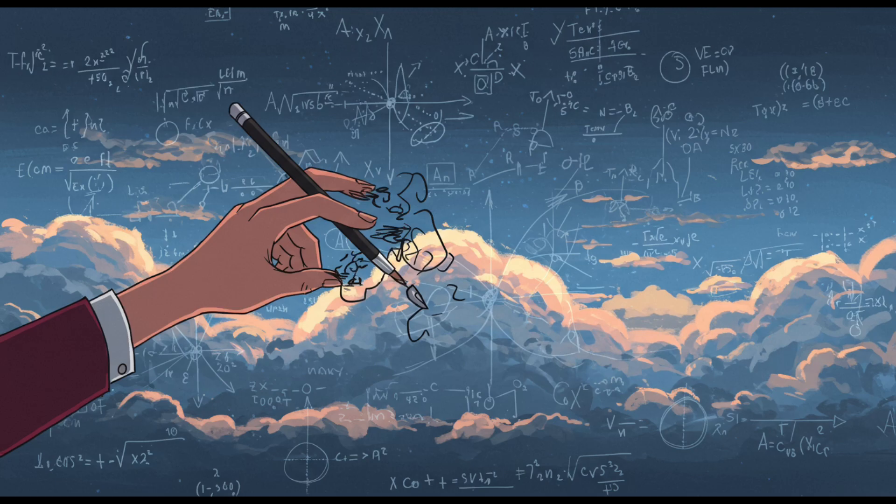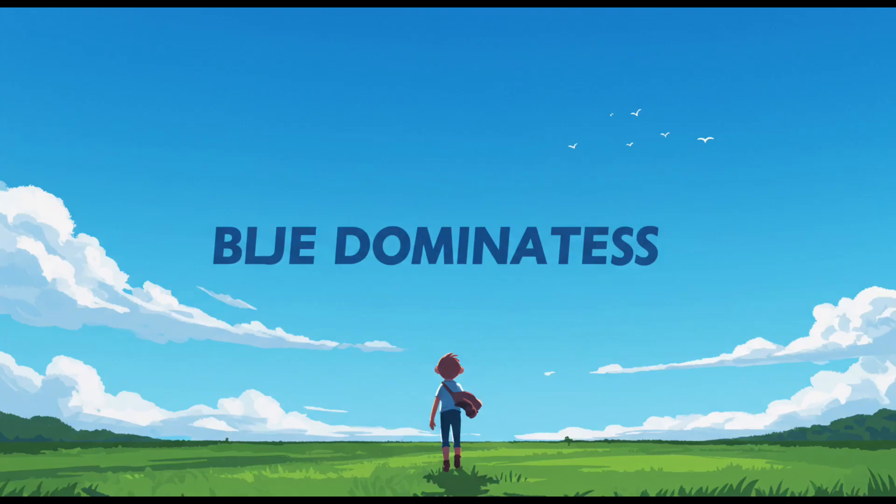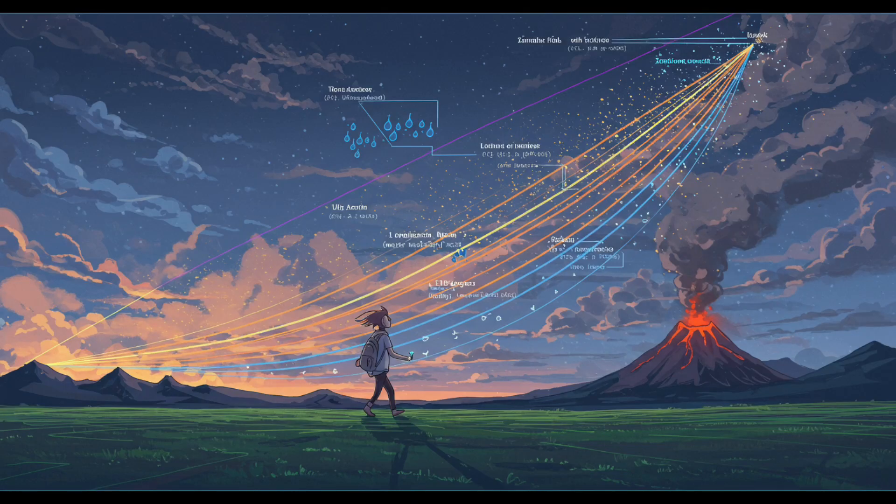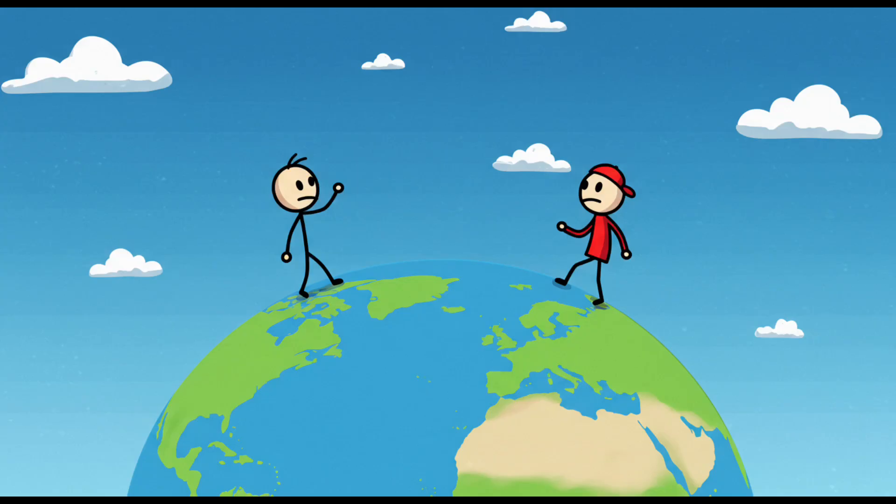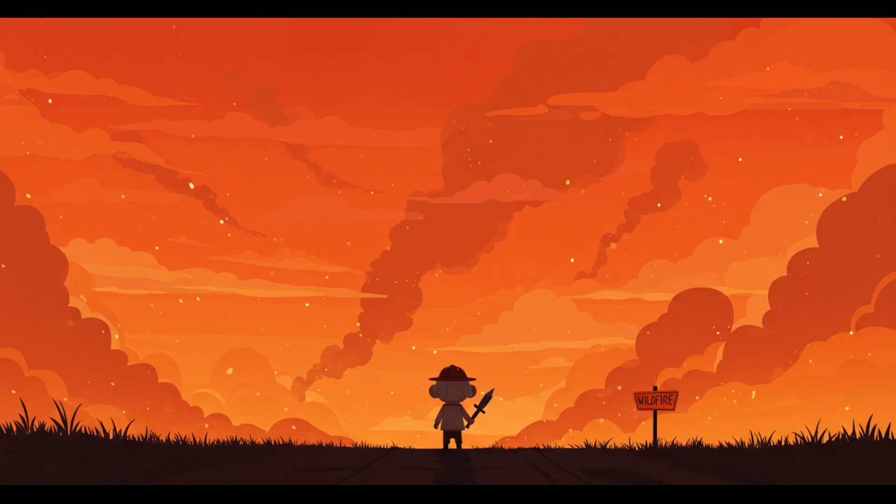The actual science is messier than the neat answers we memorize. Yes, Rayleigh scattering makes blue dominate during the day, but the exact shades of blue, pink, orange, and purple depend on dust particles, water vapor, air pollution, and even volcanoes thousands of miles away. The same sky can look slightly different depending on which hemisphere you're in, what season it is, or if some giant wildfire decided to spice up the atmosphere.